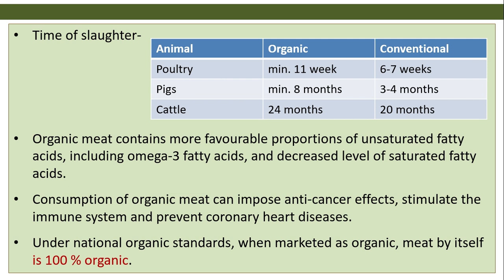Organic meat contains more favorable proportions of unsaturated fatty acids including omega-3 fatty acids and decreased levels of saturated fatty acids. Consumption of organic meat can impose anti-cancer effects, stimulate the immune system, and prevent coronary heart diseases. Under national organic standards, when marketed as organic, meat by itself is 100 percent organic.